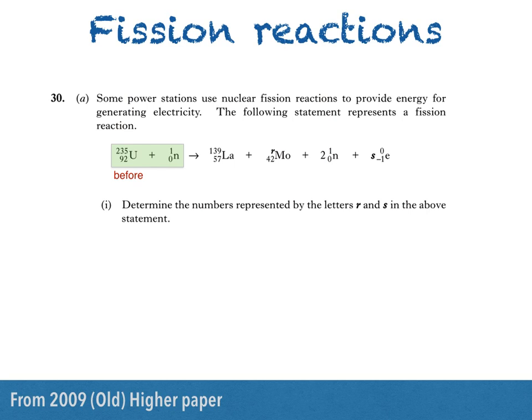We then see a description of the fission reaction. Before the reaction, we have a uranium-235 nucleus and a neutron. This tells us that it must be an induced fission reaction, where the uranium-235 nucleus is bombarded by a neutron. As a result, the large nucleus splits into two smaller nuclei, a lanthanum-139 nucleus, a molybdenum nucleus, as well as two neutrons and a certain number of electrons.